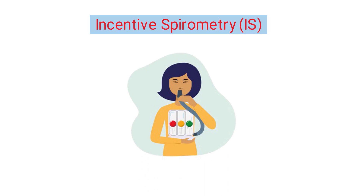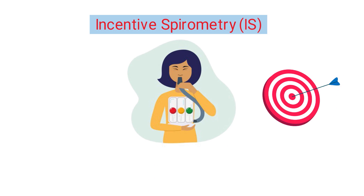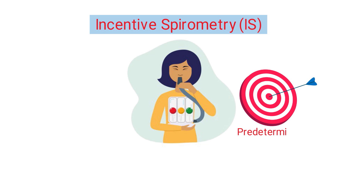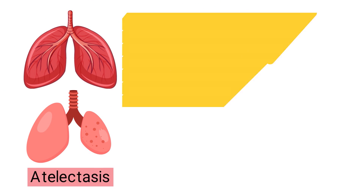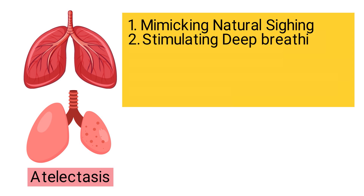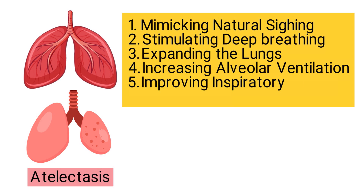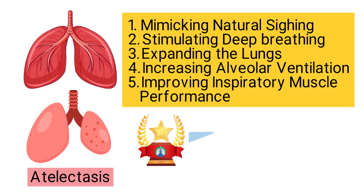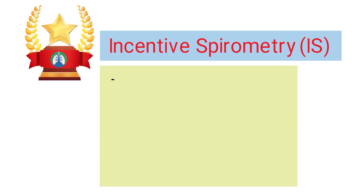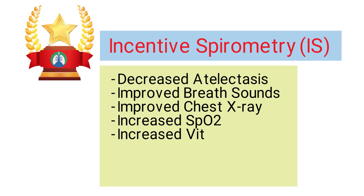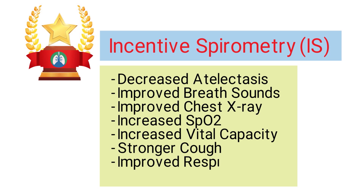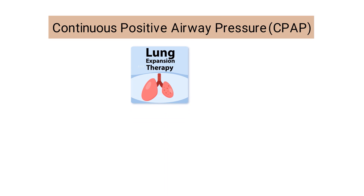The next type is incentive spirometry, a technique in which patients use a handheld device to take sustained maximum inspirations. The goal is to reach a predetermined volume of air initially set by the respiratory therapist. This technique can improve lung function and prevent atelectasis by mimicking natural sighs, stimulating deep breathing, expanding the lungs, increasing alveolar ventilation, and improving inspiratory muscle performance. Potential outcomes include decreased atelectasis, improved breath sounds, improved chest X-ray, increased SpO2, increased vital capacity, a stronger cough, and improved respiratory muscle performance.